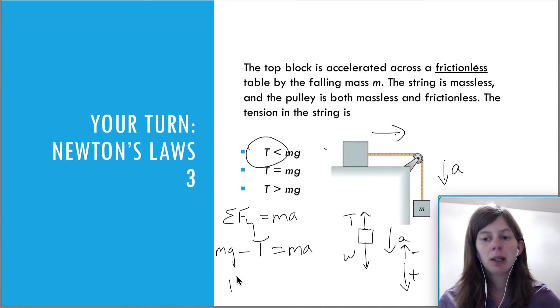And then I go ahead and solve for T. And you'll see that it's going to end up being Mg minus Ma. So again, showing us that the tension is less than the weight.